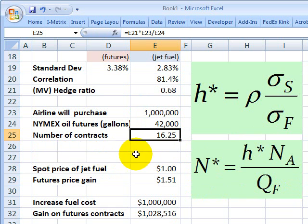And I get the answer is 16.25 or 16 contracts, approximately. That's the optimal hedge that will minimize the variance of my hedge. In other words, what we're saying is if I want to hedge against the anticipated purchase of 1 million gallons of jet fuel, I'm going to affect a long hedge or take a long position on 16 contracts for heating oil futures.